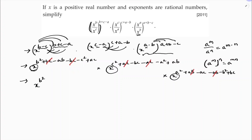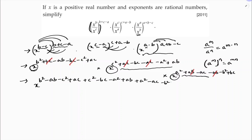So I will write one base: x power b squared minus ab minus c squared plus ac, plus c squared minus bc plus c squared minus bc minus a squared plus ab, plus a squared minus ac minus b squared plus bc. Here b squared and minus b squared cancel; minus ab plus ab cancel; minus c squared plus c squared cancel; plus ac minus ac cancel; minus a squared plus a squared cancel; minus bc plus bc cancel.